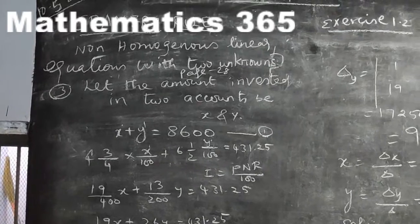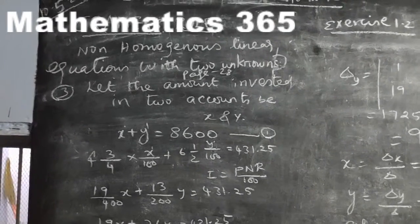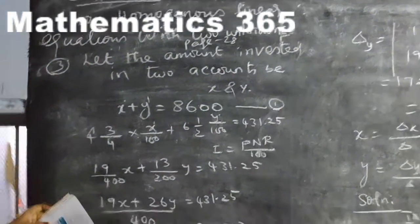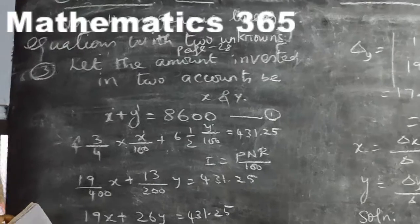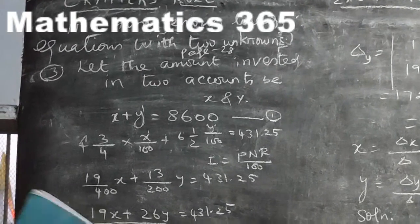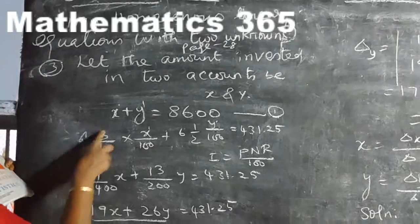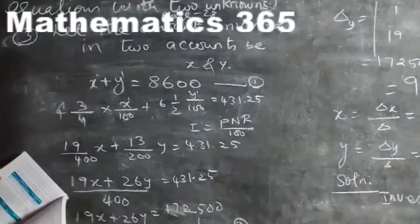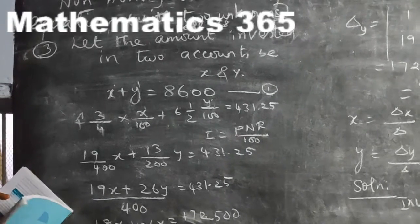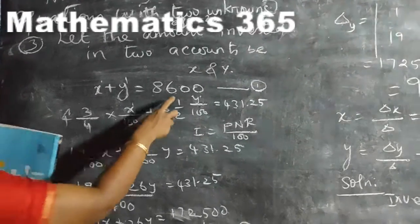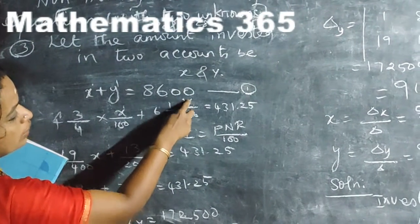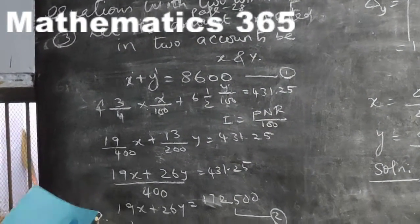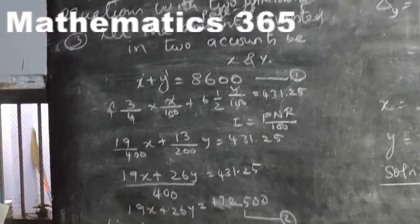The question states: a total of rupees 8600 was invested in 2 accounts. With 2 accounts, use variables X and Y. One account has 4 and 3/4 percentage interest — percentage divided by 100 gives a mixed fraction. So the first account interest is 4¾% of X divided by 100. Another account has 6½ percentage annual interest, giving Y by 100.